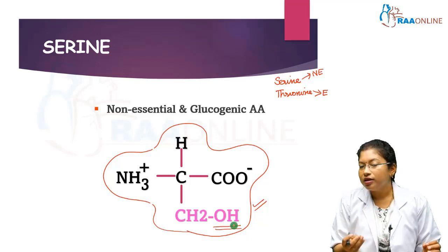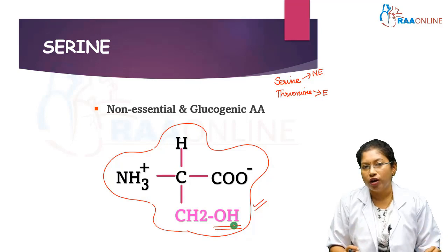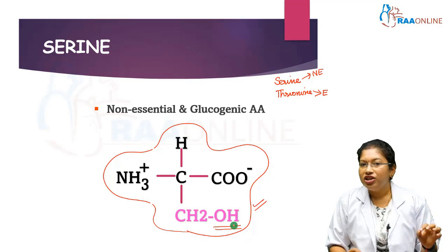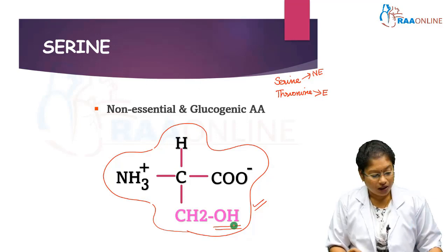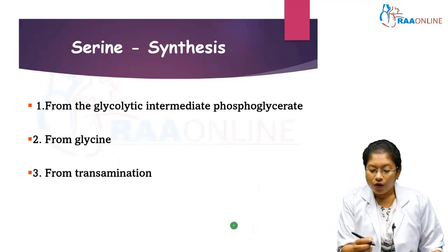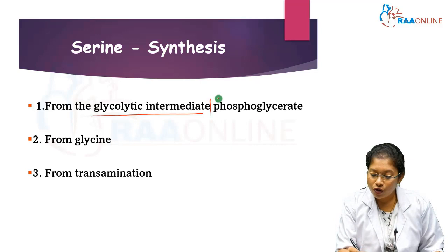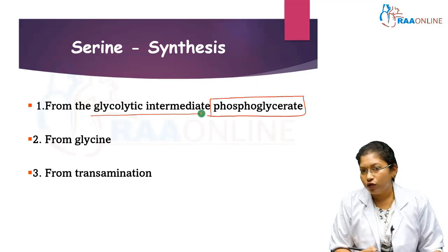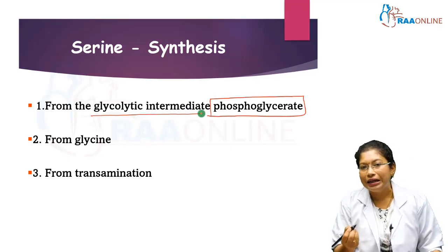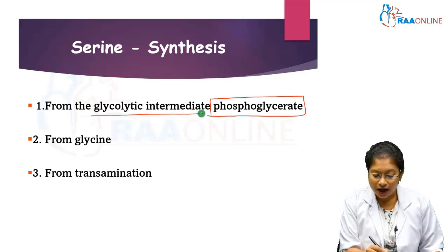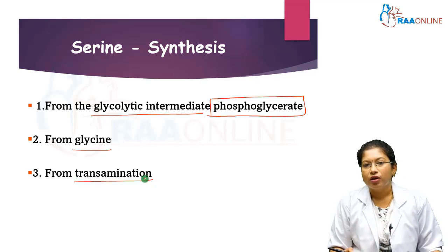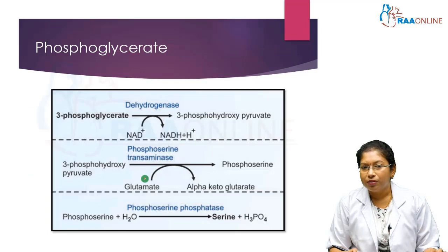Serine is synthesized in our body by three ways, which you can remember as GGT. The first G represents the glycolytic intermediate 3-phosphoglycerate, the second G represents glycine, and T represents transamination.